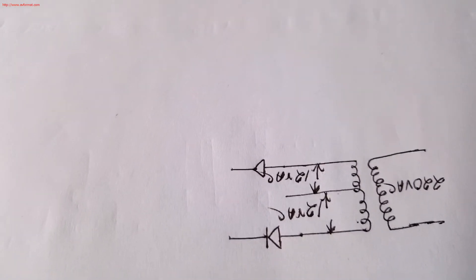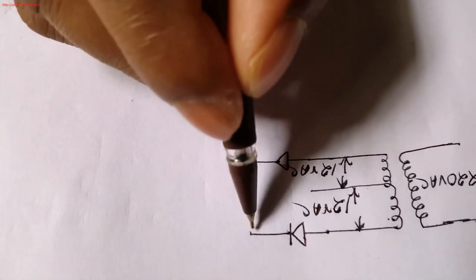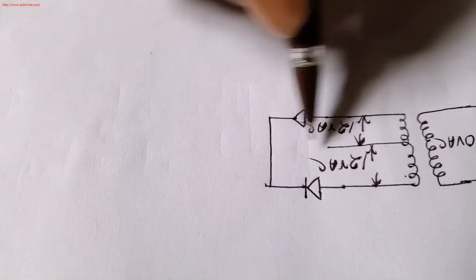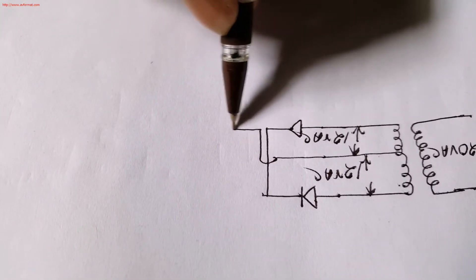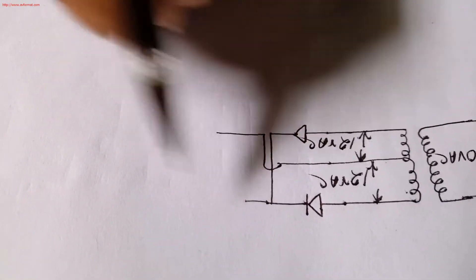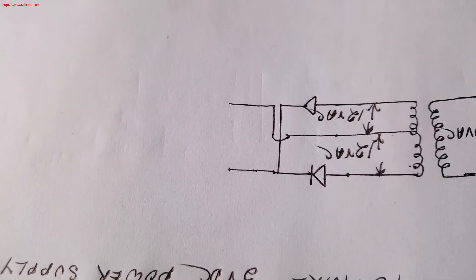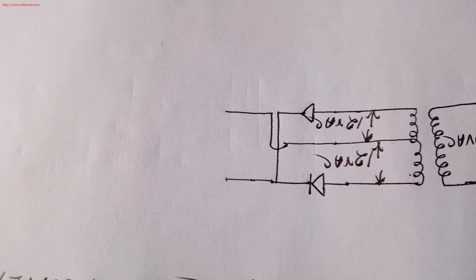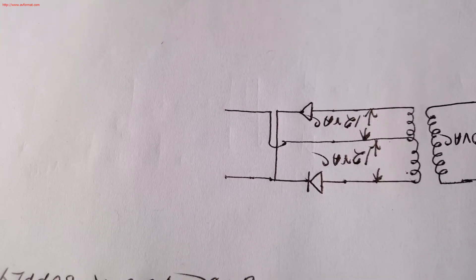So output of this two diodes will be connected together and this line is for ground. So we'll find this 12 volt AC rectified by diode. This is actually not pure DC, so there is some AC component available.